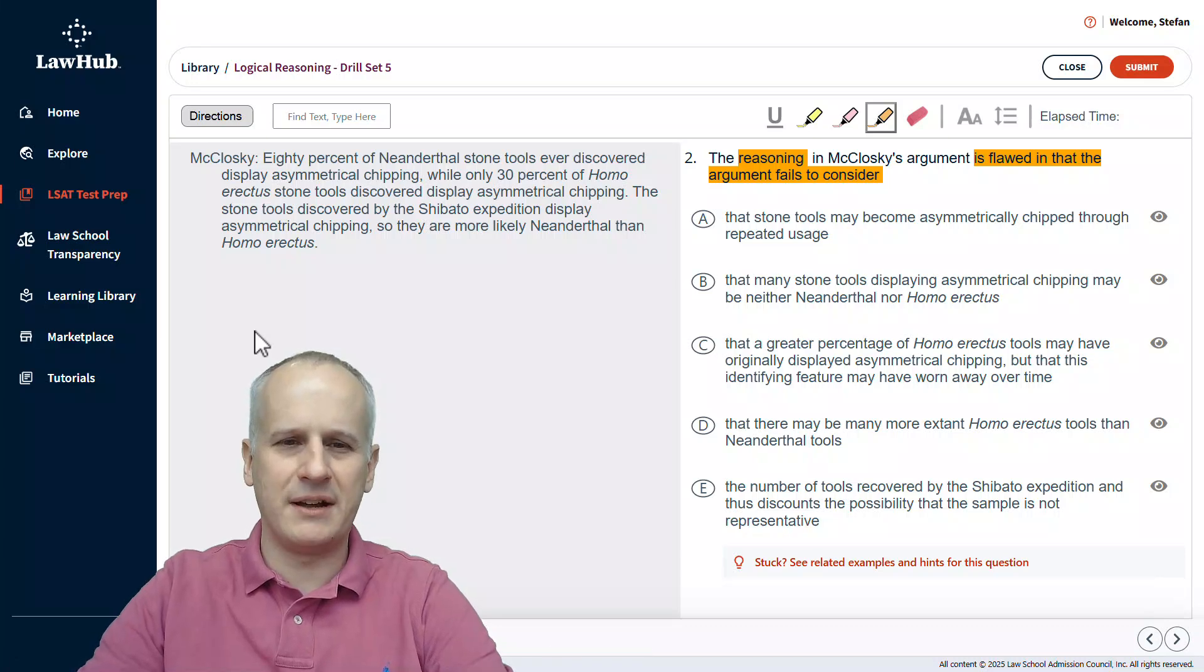McCloskey states, 80% of Neanderthal stone tools ever discovered display asymmetrical chipping, while only 30% of Homo erectus stone tools discovered display asymmetrical chipping. The stone tools discovered by the Shibato expedition display asymmetrical chipping, so they are more likely Neanderthal than Homo erectus.